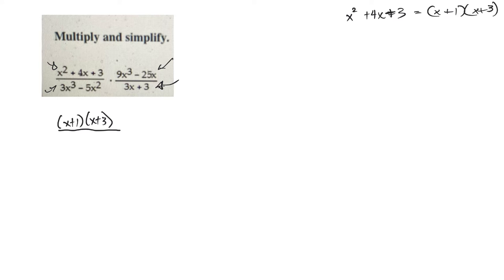Do the same thing with the other ones. This bottom one looks a little funny. 3x cubed minus 5x squared. I think I can take out an x squared that'll leave me with 3x minus 5, I believe.